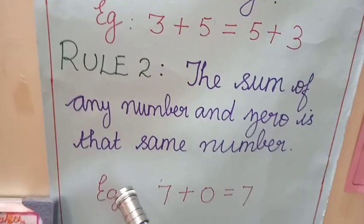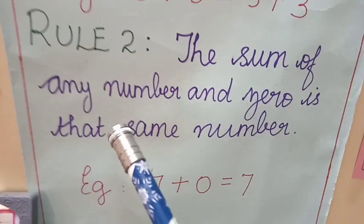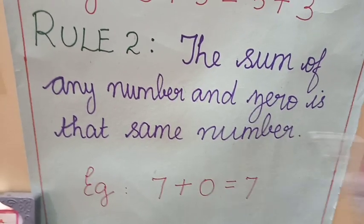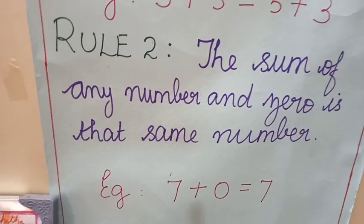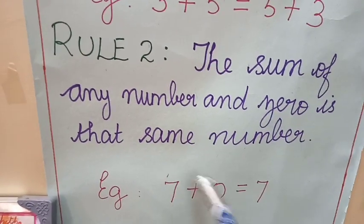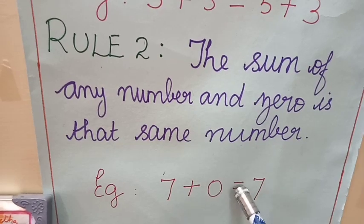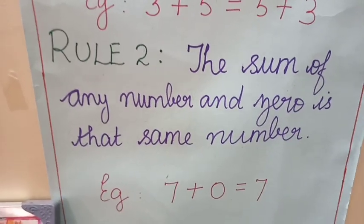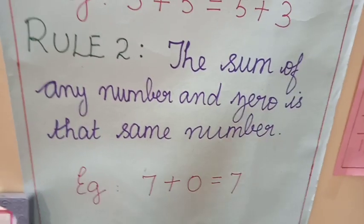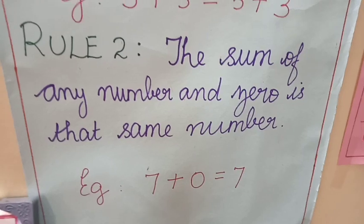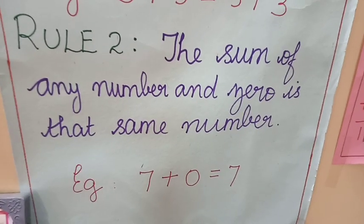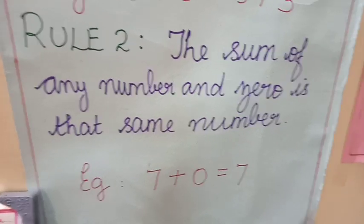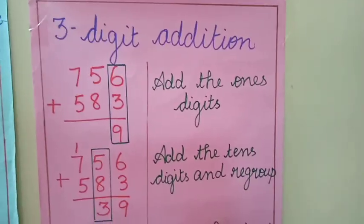Rule 2: The sum of any number and 0 is that same number. When you add any number with 0, we get the same number as the answer. The sum of any number and 0 is the same number.